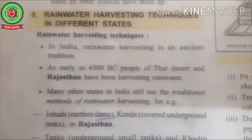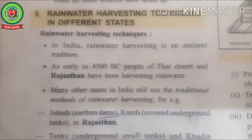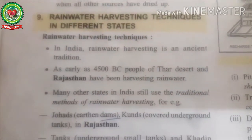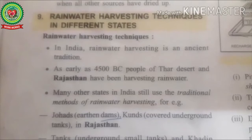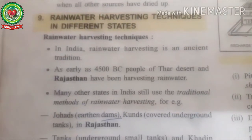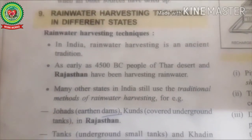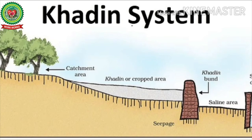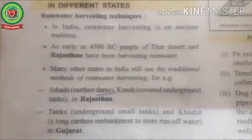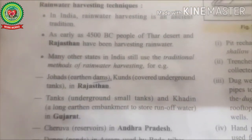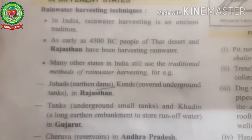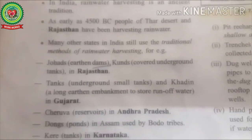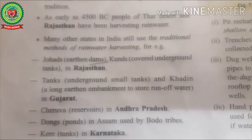Johar refers to earthen rainwater storage tanks principally used in Haryana and Rajasthan that collect and store water throughout the year for drinking by humans and cattle; they are also known as khadins in Jaisalmer. Kunds are covered underground tanks in Rajasthan. Khadins are long earthen embankments to store runoff water in Gujarat. Chiruva are reservoirs found in Chittur district of Andhra Pradesh to store runoff. Dongs are ponds in Assam used by Bodo tribes. Karnataka uses carrying tanks.